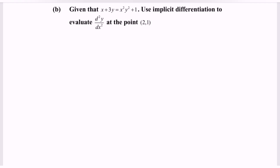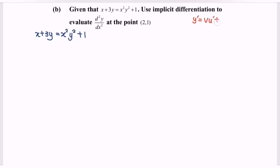In this video, I'm going to discuss the example for implicit differentiation. Kindly focus on x plus 3y equals x² multiplied with y² plus 1. Notice that we're going to use the product rule. So kindly state the product rule, where y prime equals v times u prime plus u times v prime.